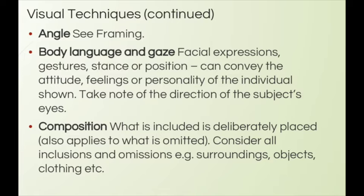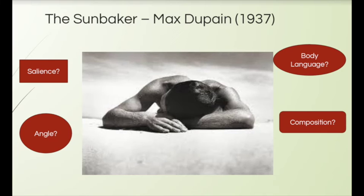Composition is what's included in an image, and it's always deliberately placed — unless it's a one-in-a-million chance shot, it's always deliberate. It also applies to what's left out. When you look at an image, consider everything that's included and ask yourself why it's there. This is the Sunbaker — a very famous image, often on postcards and in the National Gallery in Canberra. What's the salient object in this one? The head — or the guy, the sun baker.